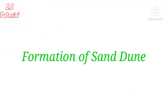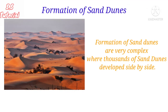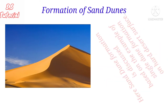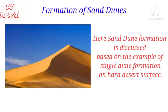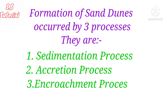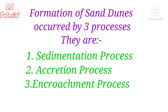Let's know the formation of sand dunes. Formation of sand dunes is very complex, particularly when thousands of sand dunes have grown side by side. Here we will discuss the formation of sand dunes based on the example of a single dune formation on a hard desert surface. Formation of sand dunes occurs generally by three processes: sedimentation, accretion, and encroachment.